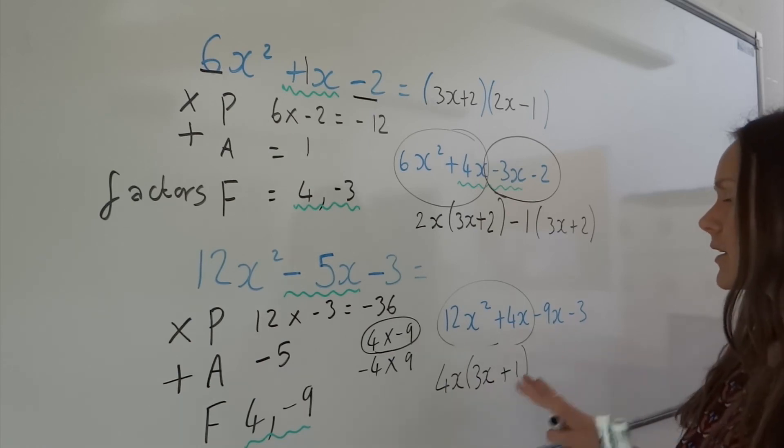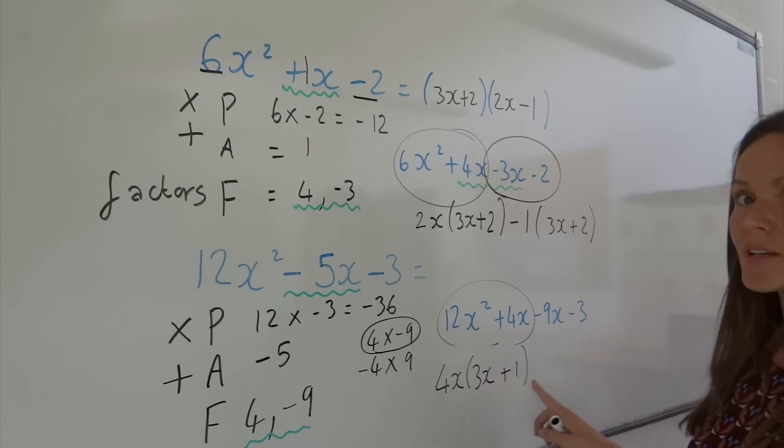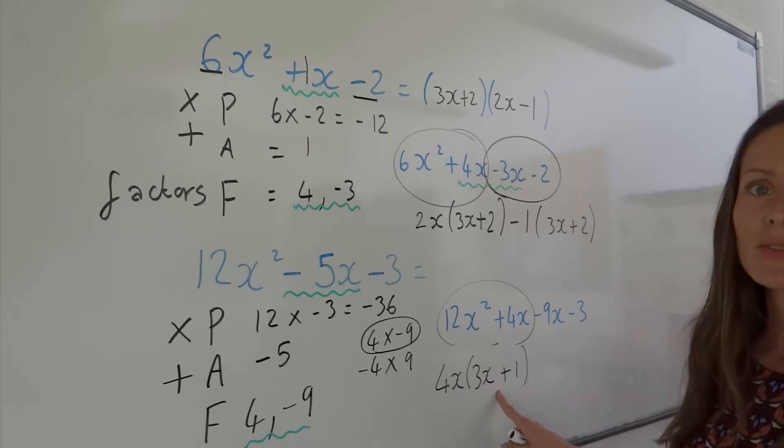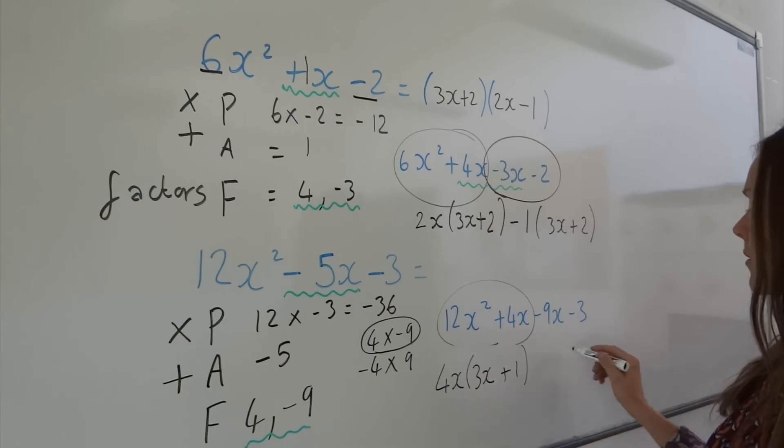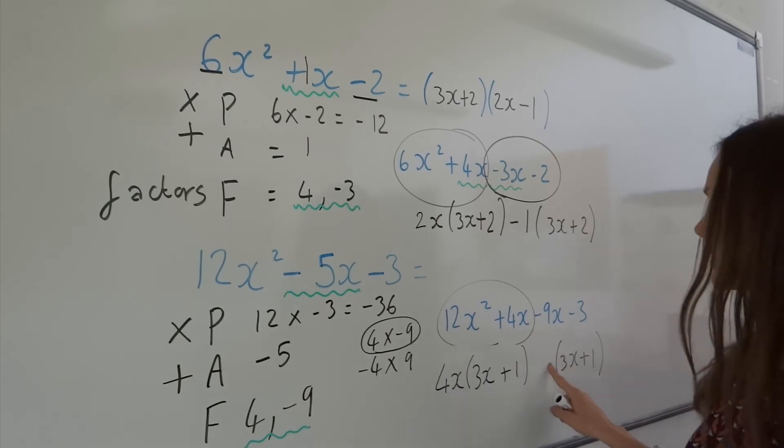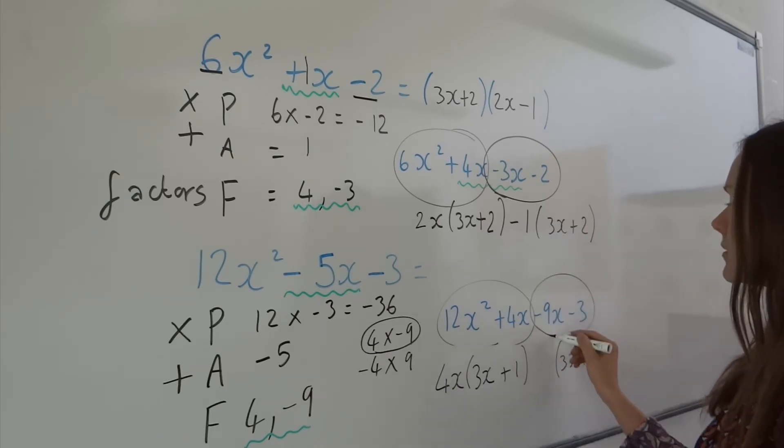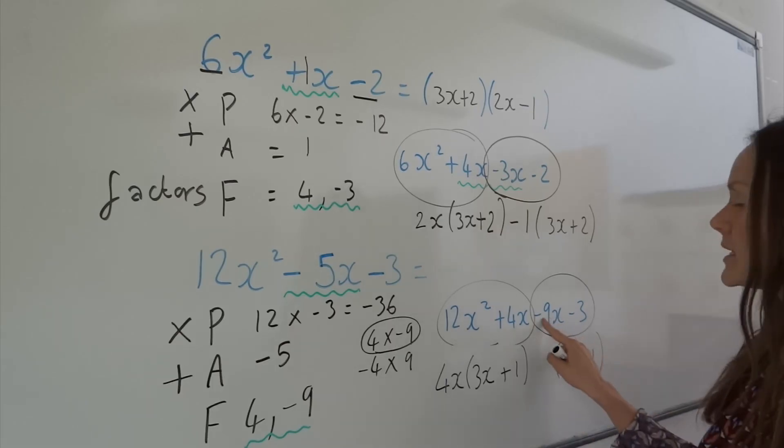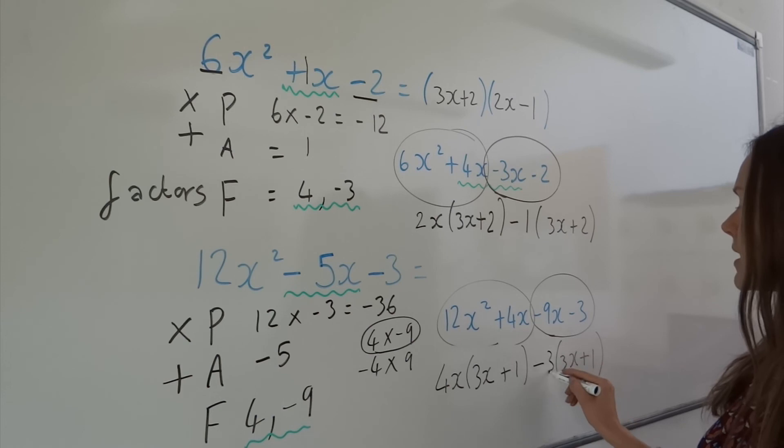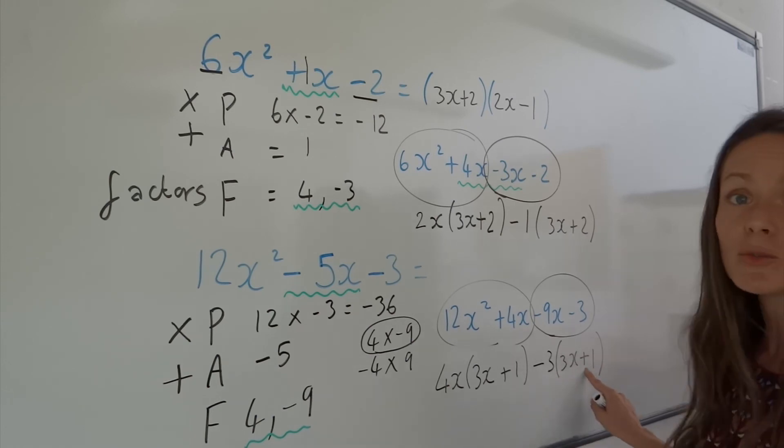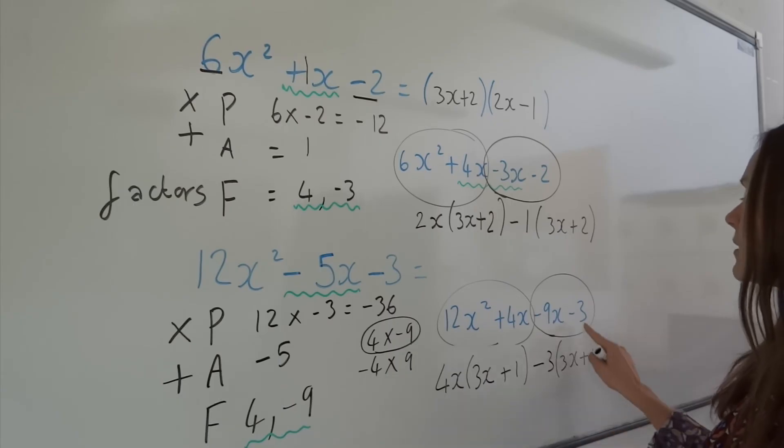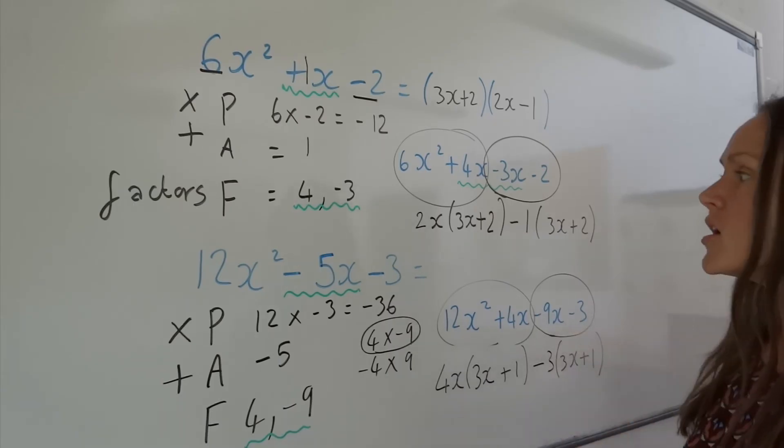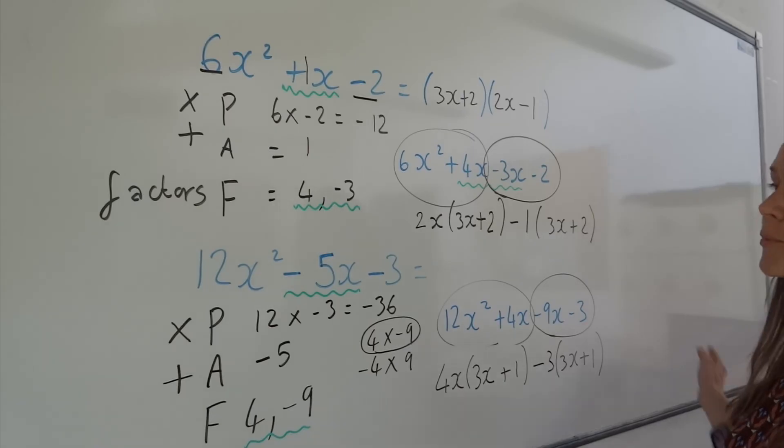Now if you've done that correctly, remember, the next bracket must be the same as this one. So if we've got 3x plus 1 here, just leave a little gap. This one is also 3x plus 1. Now we need to work out what we multiply this bracket by to get back to here. Remember to include that negative with that 9. So something multiplied by positive 3x gives me negative 9x. Well, it must be negative 3. So when I multiply these together, it should also take me back to here, and minus 3 times 1 is minus 3, so it does.